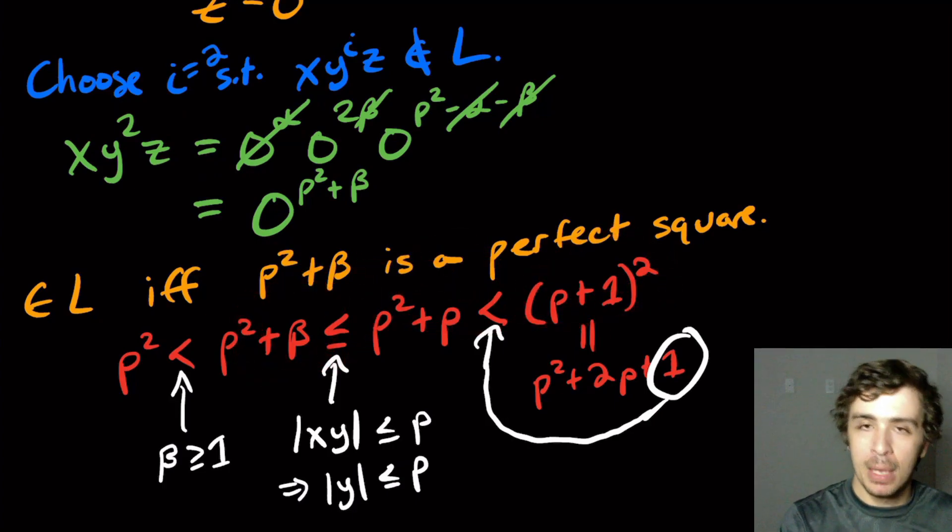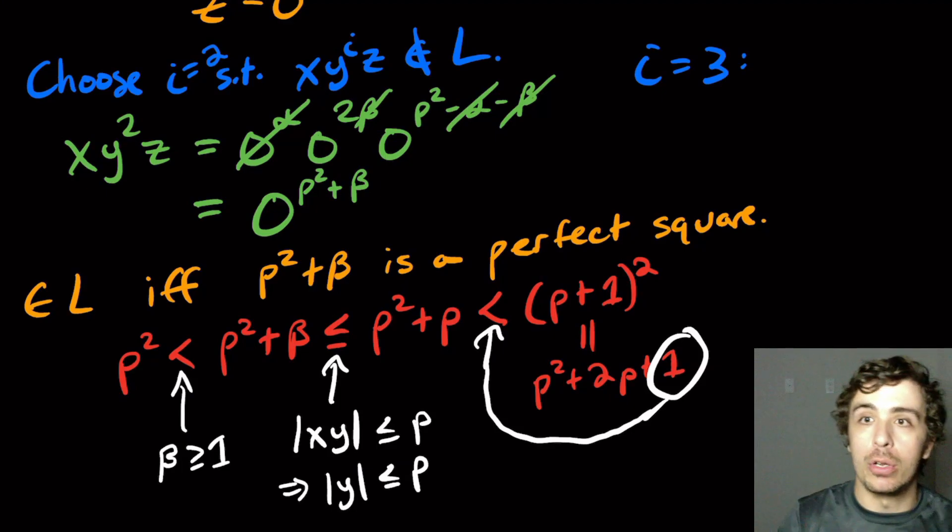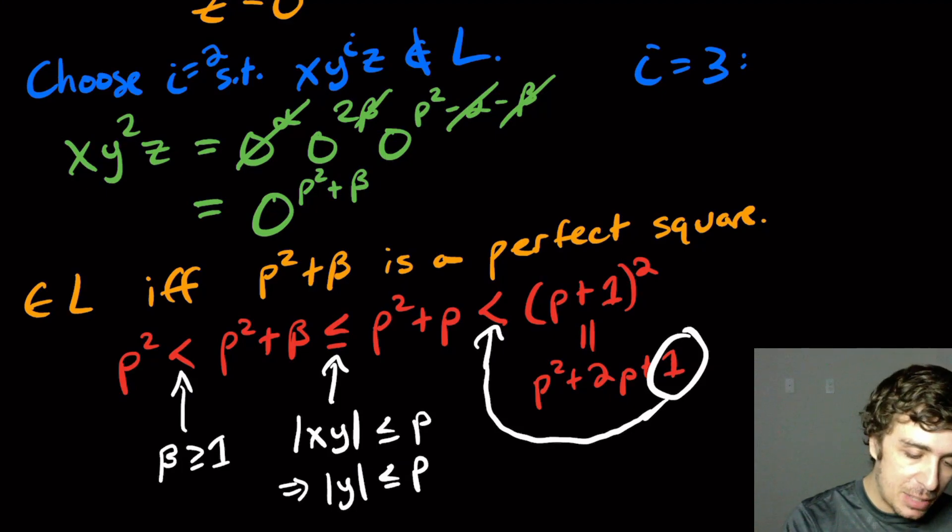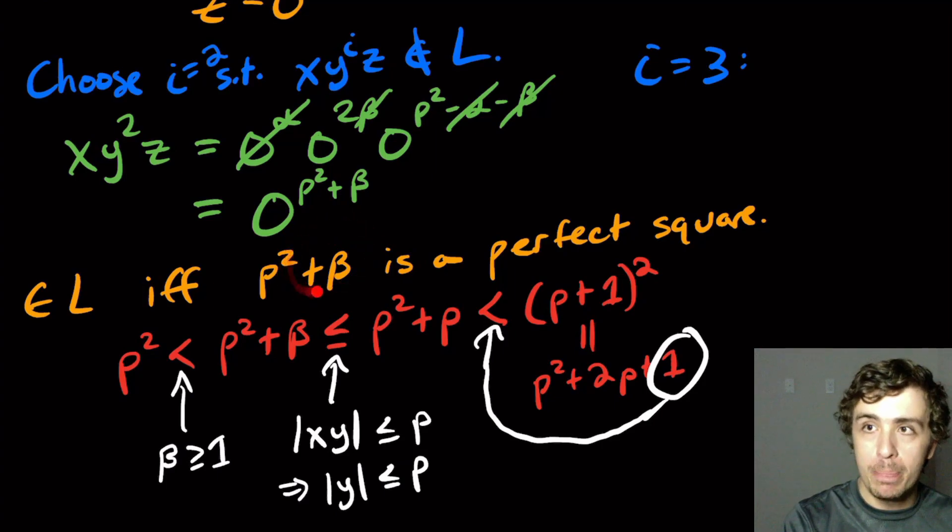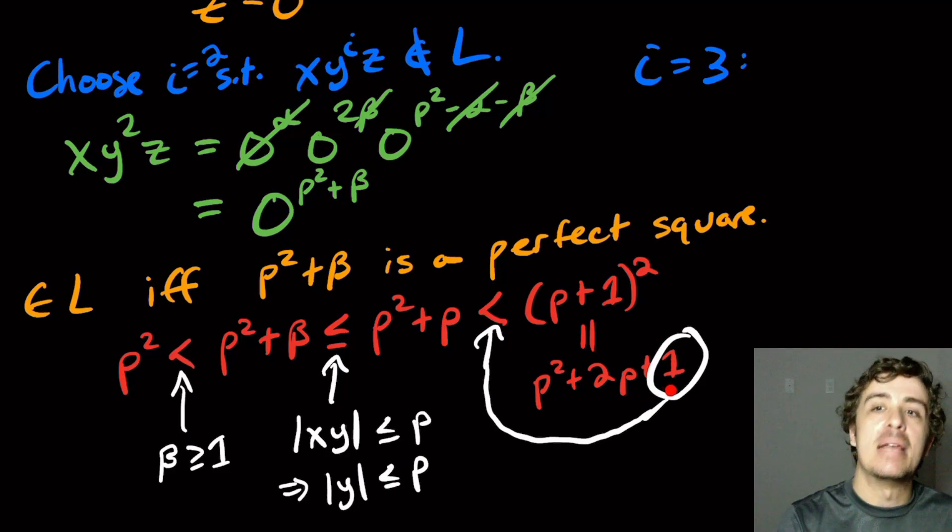So this actually gives you good reason to why the i equal three one I mentioned earlier also works. Because if you substitute i equal three, you're going to get a p squared plus two beta here. And then here, the upper bound will be p squared plus two p, which is still going to be strictly less than p squared plus two p plus one.